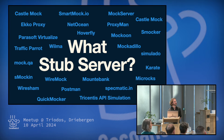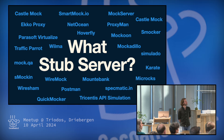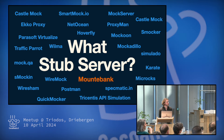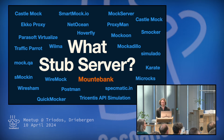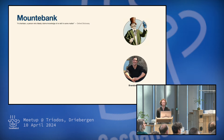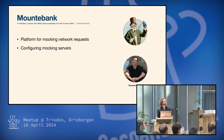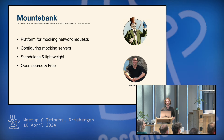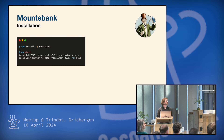I did a Google search last week and there are quite some stub servers. And I really had to laugh at all the puns on the word mock like Smokee or Mockadillo. But the one we're using at Triodos is called Mountain Bank and I want to tell you something about it. So Mountain Bank is a project by Brandon Byers and it's basically a platform for mocking network requests. You can use it to configure your servers. It's standalone. It's lightweight. It's open source and it's free. And it runs on Node.js.